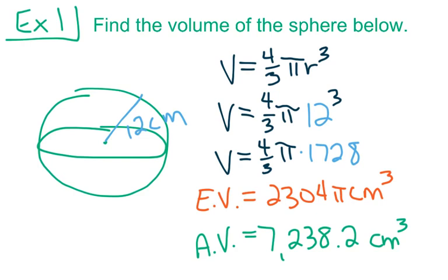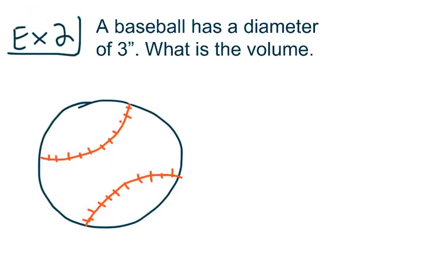That was our first example finding the volume of a sphere. For our second example, a baseball has a diameter of 3 inches — that's actually pretty accurate, just under 3 inches for the diameter of a baseball. What is the volume? Thinking back to what we talked about, diameter goes all the way across, so 3 inches is not the value we want to use for the radius.